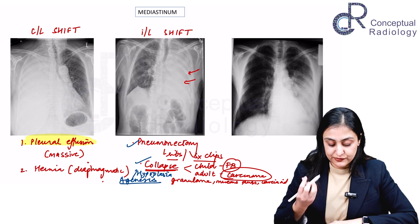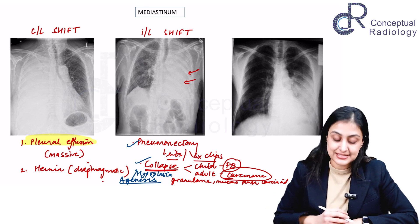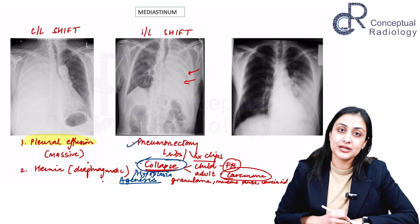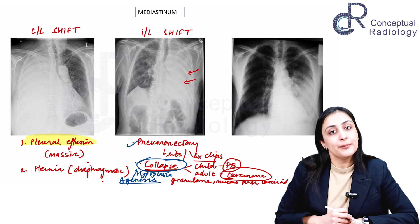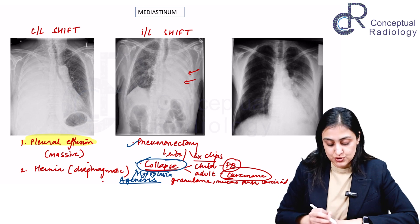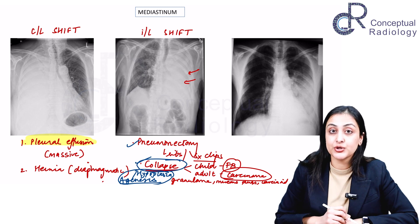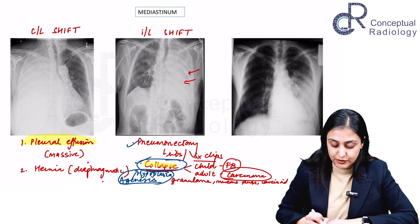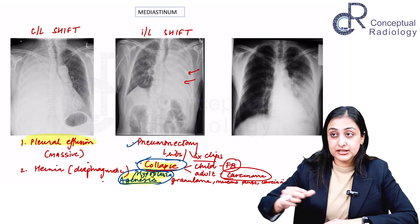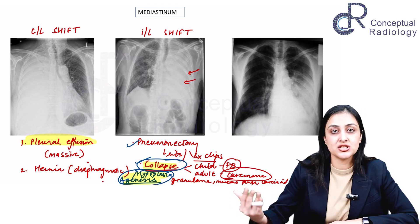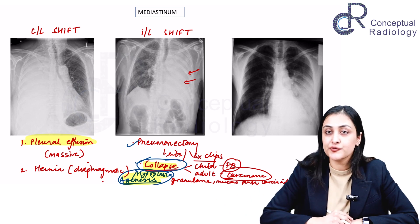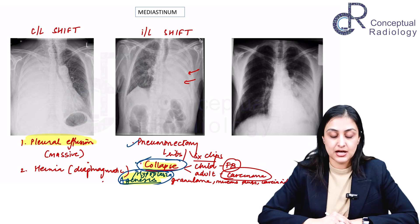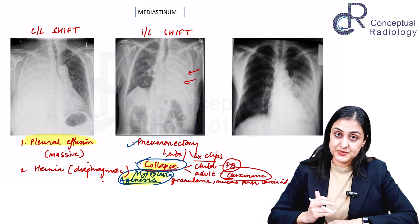If there is no clear cause of collapse, or if asked what the next step would be, proceed with a contrast CT chest. This will help identify the cause of collapse and also assess the status of the pulmonary artery — to determine whether agenesis or proximal interruption of the pulmonary artery is present. This is how you approach ipsilateral shift.